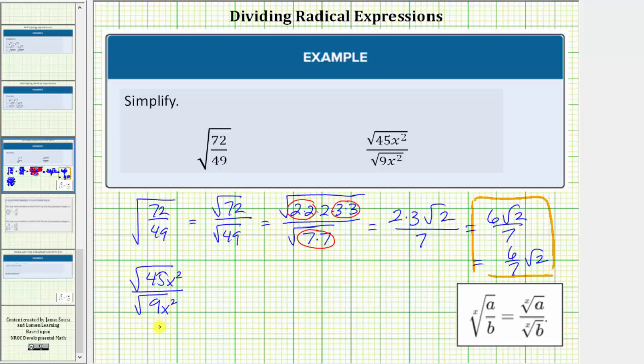So what we'll do this time is use this property in the reverse order. Let's write this as the square root of a fraction. We'd have the square root of 45x² divided by 9x². In this form,